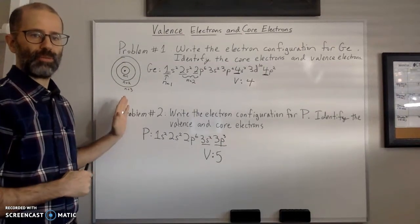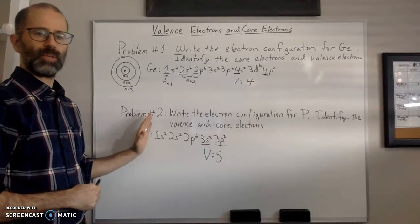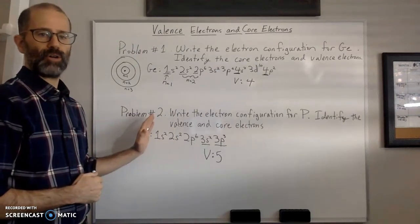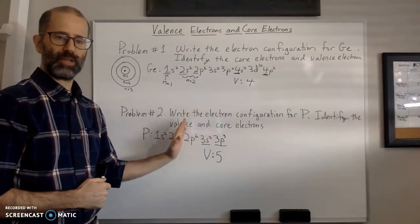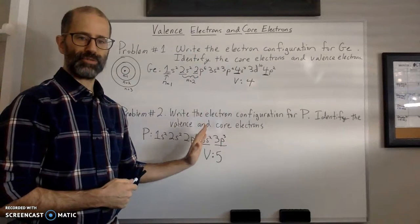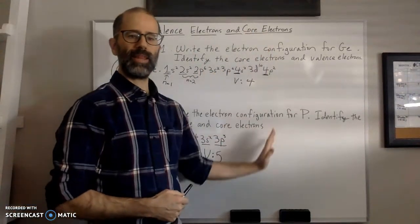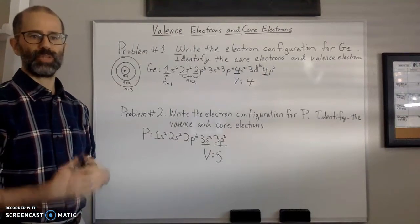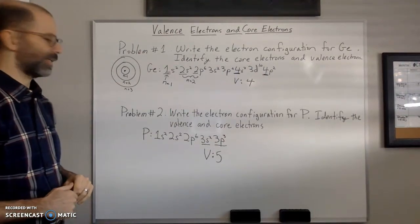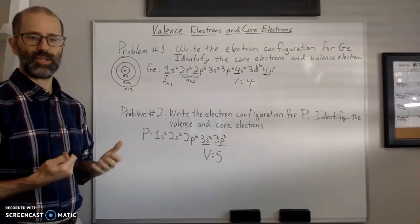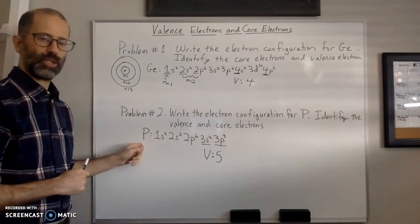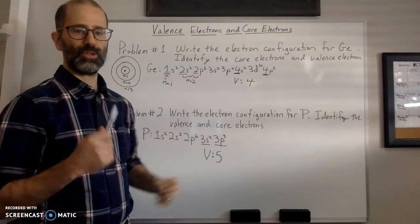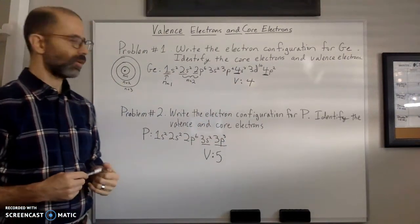For main group elements, the group number equals the number of valence electrons. Group 1A has one valence electron, Group 2A has two, Group 3A has three, Group 4A has four, and so on, until the noble gases which all have eight electrons in their outermost shell — with the exception of helium, which only needs two. You'll notice phosphorus is in Group 5 and has five valence electrons, and germanium is in Group 4 and has four valence electrons.